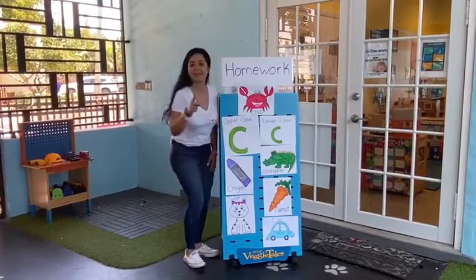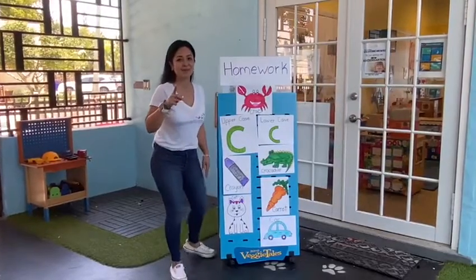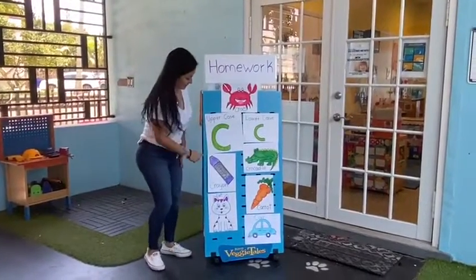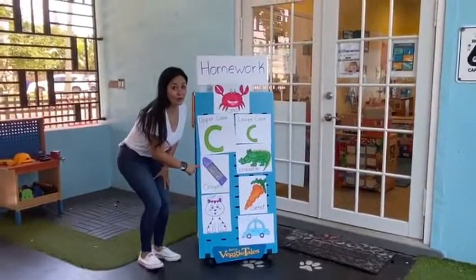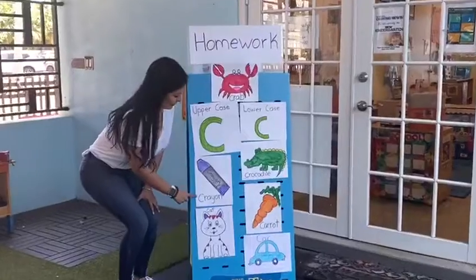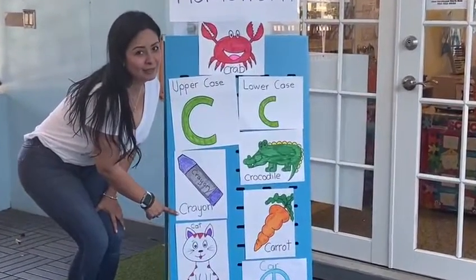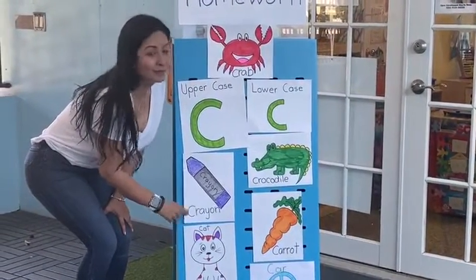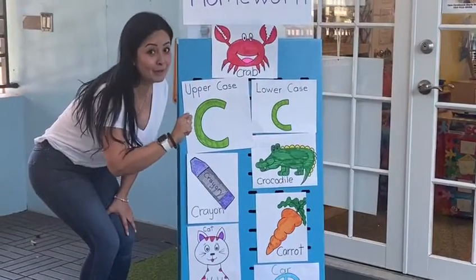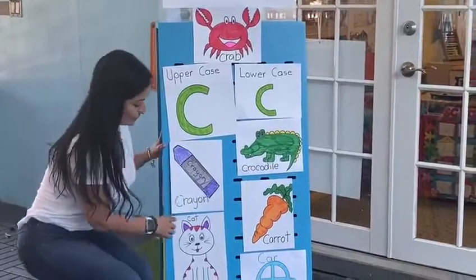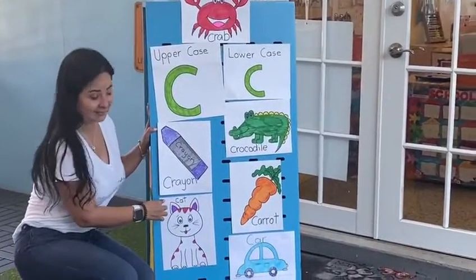Now I'll say some examples for you. C is for crayon. All my students like crayon because it makes a beautiful job. That is cat.